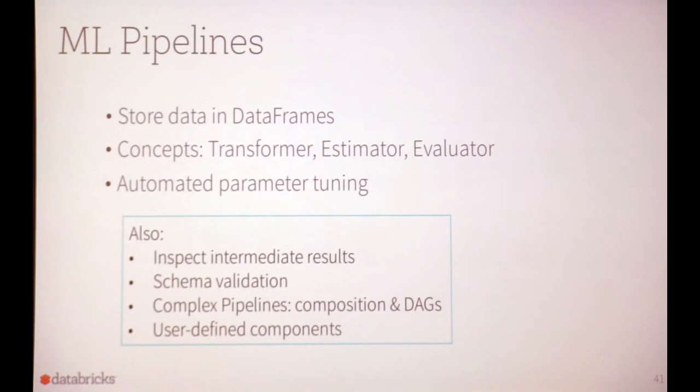The key points for ML pipelines: we store data in DataFrames; the main concepts are Transformer, Estimator, and Evaluator; and we provide automated parameter tuning. Other features include inspecting intermediate results, schema validation which runs the pipeline with metadata quickly to check if it will fail before doing the expensive data run, support for complex pipelines including directed acyclic graphs, and user-defined components — so you can define your own estimator, model, or evaluator.